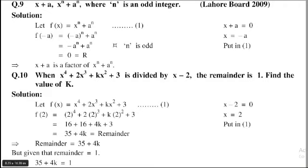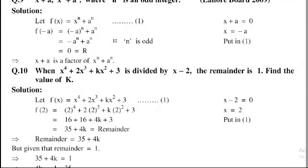But given that remainder is equal to 1, so 35 plus 4k is equal to 1. Therefore 4k is equal to 1 minus 35.